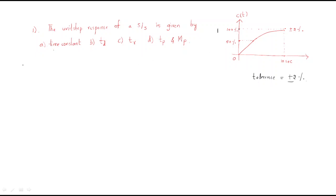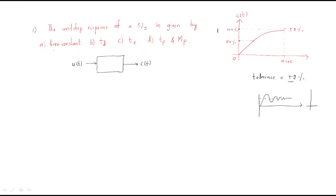To understand this, consider what system we are using. We are giving a unit step input to a system of unknown order and observing the output c(t). If it were a second order system, there would be oscillations. By observing the output waveform directly, we can identify this as a first order system.